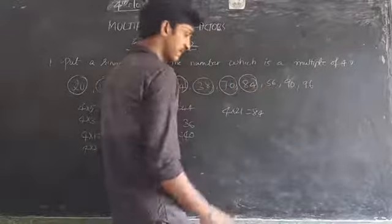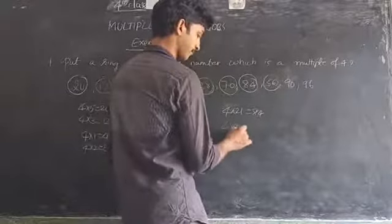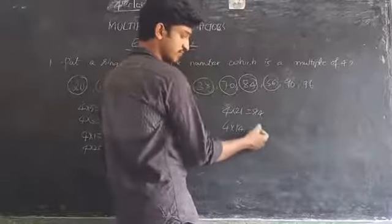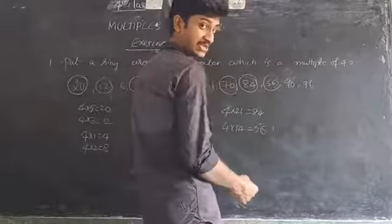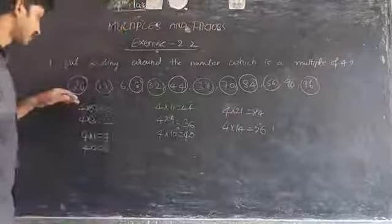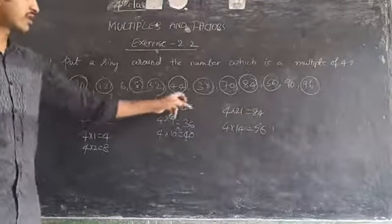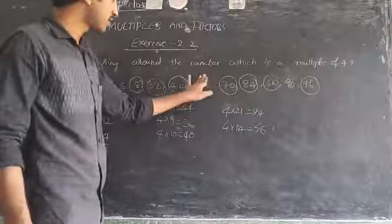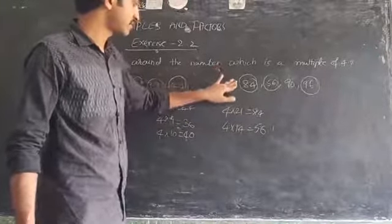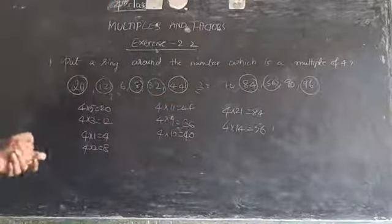56 is a multiple of 4 because 4 into 14 is 56. 90 is not a multiple of 4, and 96 is a multiple of 4. So the numbers which are multiples of 4 are: 20, 12, 32, 44, 56, 84, and 96. Numbers like 38 and 70 are not multiples of 4.